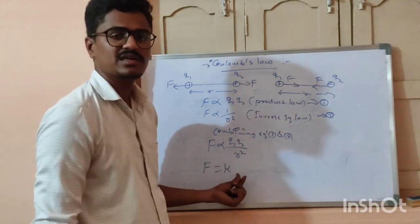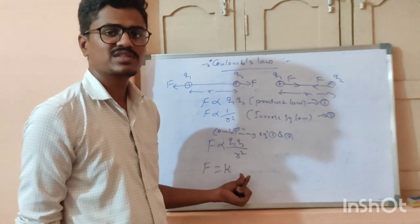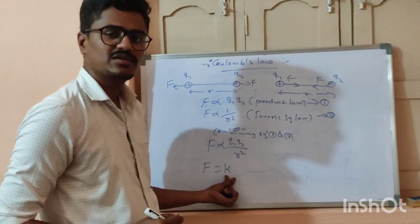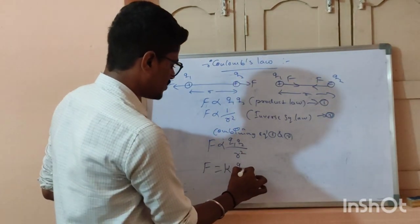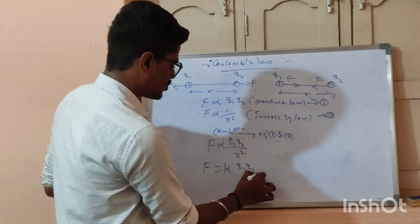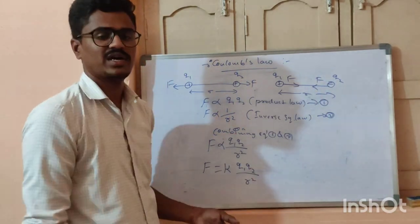To remove the proportional symbol and write an equal sign, we must introduce a constant value K. So the electrostatic force F equals K times Q1 times Q2 divided by r squared.